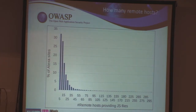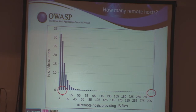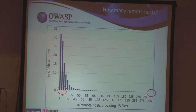Also interesting is the distribution of how many script providers are trusted by a web application. The distribution is skewed quite far to the right — some websites use up to 295 script providers to run their site, and you only need one to get compromised. More than 60% were actually using more than five script providers, so it's not only one or two parties they're trusting for their own website.